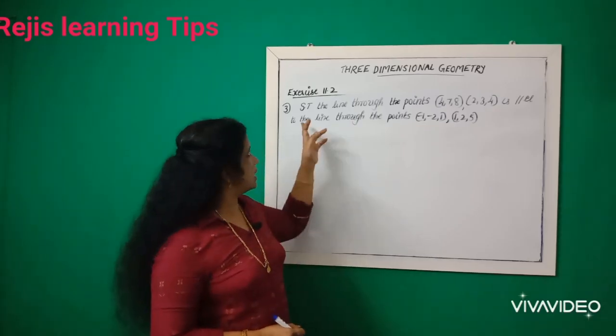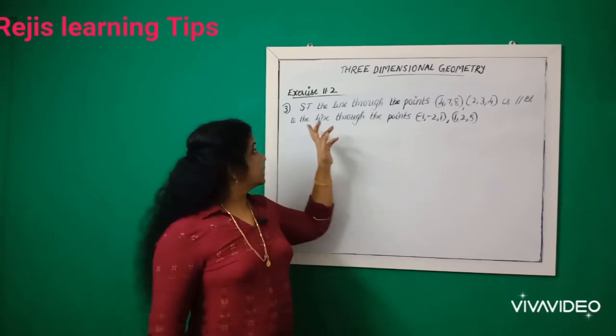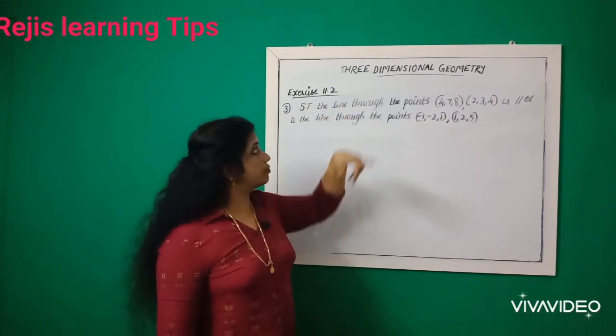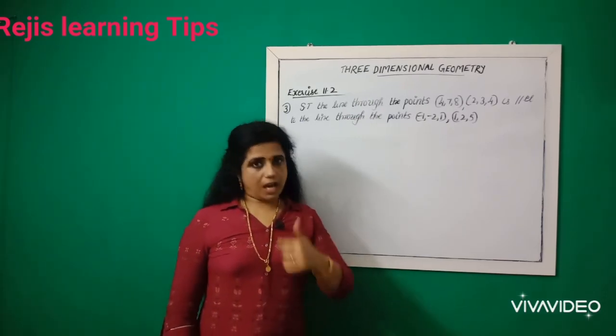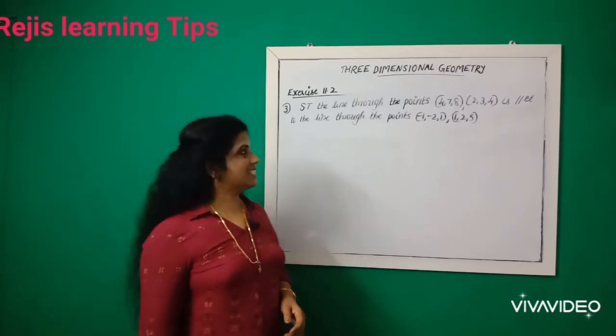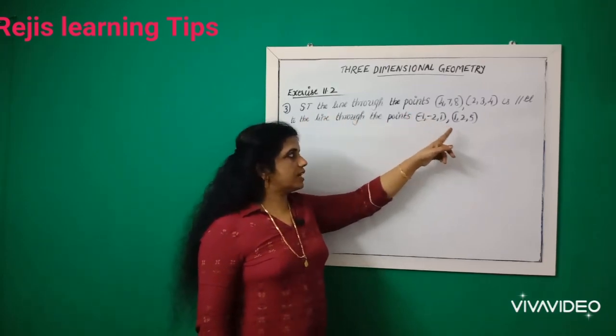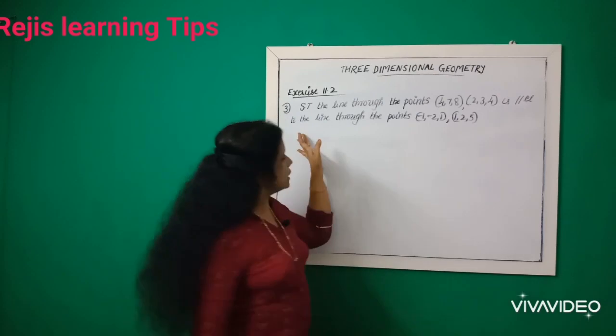Hi students, welcome back. Today we are going to discuss the third question from Exercise 11.2 of three-dimensional geometry. Are you ready? Okay, let us start. Show that the line through the points (4,7,8) and (2,3,4) is parallel to the line through the points (-1,-2,1) and (1,2,5).